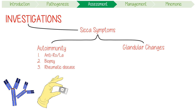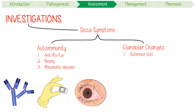Evidence of glandular damage can be shown in four ways. Firstly, a Schirmer test which measures tear production by placing a strip of paper over the lower eyelid and quantifying how wet it becomes. Ocular surface staining can be done to empirically measure eye damage caused by dryness.